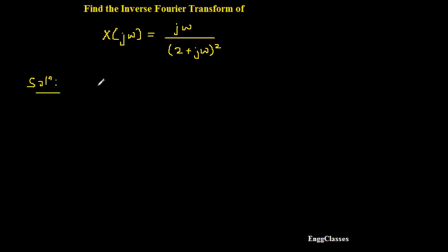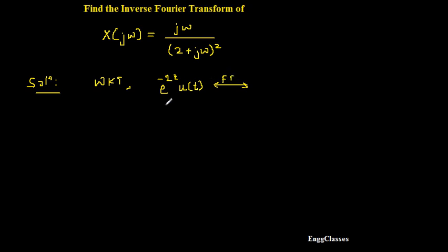Starting with the solution, we know that the Fourier transform of e^(-2t) u(t) is a very standard signal. The Fourier transform of e^(-2t) u(t) is 1 / (2 + jω). This is the standard Fourier transform pair we will build upon.